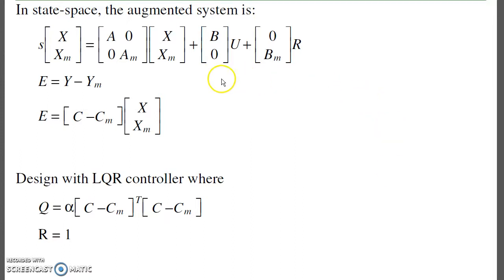In state space, the augmented system is as follows. I've got my plant states: x dot equals ax plus bu. My reference model: xm dot is a sub m x sub m plus b sub m r. The output is y minus ym, the difference between the actual output and the model's output.